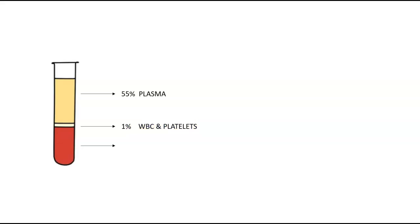The last compartment is the RBCs, which make up 45%. These are the red blood cells, also called erythrocytes. Erythrocytes have a lifespan of 120 days, roughly 3 months. After that, they wear down and die off, and new ones are produced by the bone marrow.